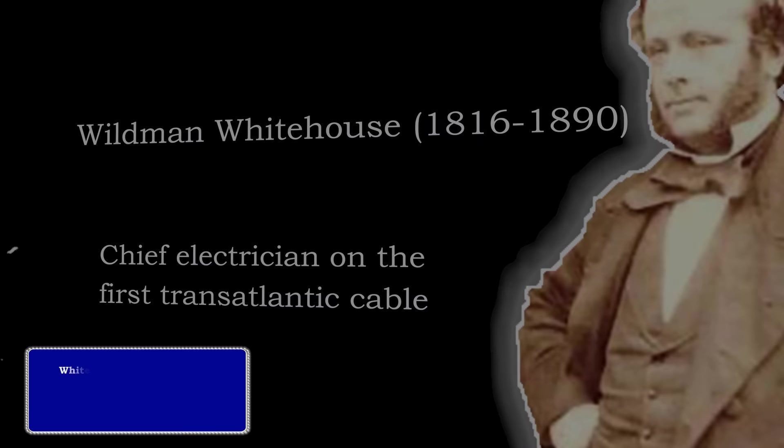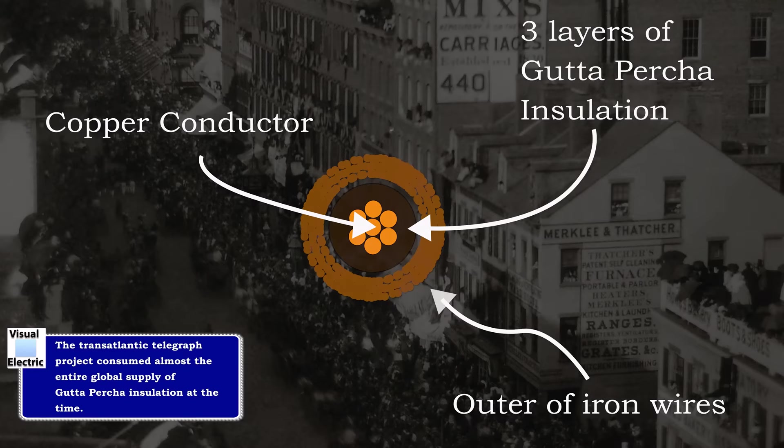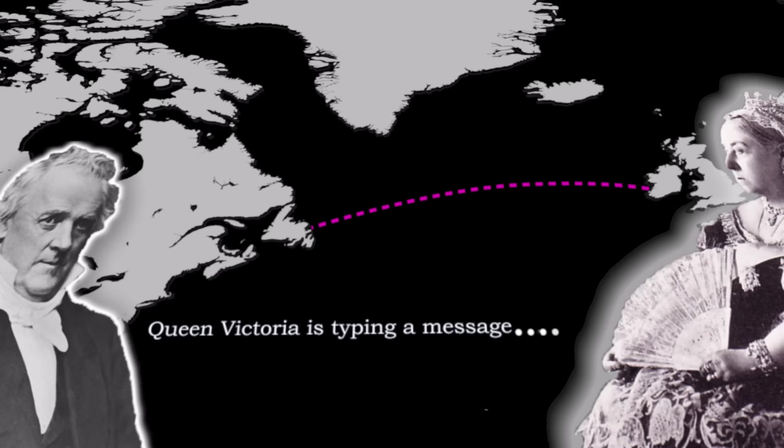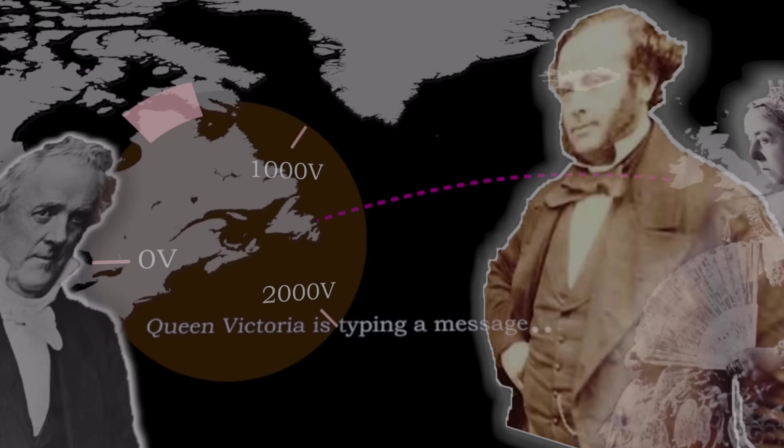Nonetheless, the cable was successfully installed and, for a time, appeared to work. This is a copy of the first messages sent over the cable between Trinity Bay in Newfoundland, Canada and Valencia in Ireland. Unfortunately, communication speeds were sluggish. It was reported that the message from Queen Victoria took 16 hours to send and receive. Furthermore, the line did not operate for very long at all.